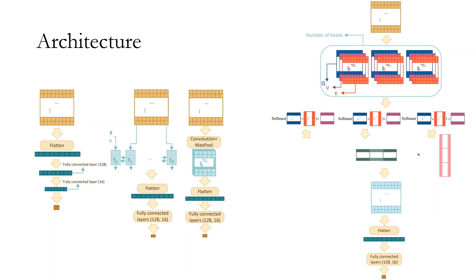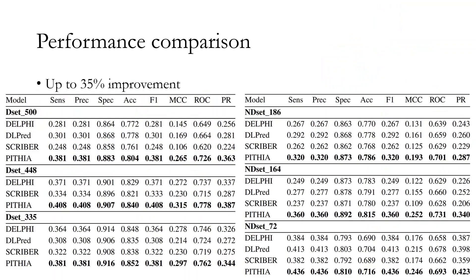We studied different architectures including multiple dense layers, RNN, and CNN. Finally, we settled on this model that uses self-attention, which performs the best, as shown on the right side of the picture. We compared our method with three state-of-the-art models, namely DLPREP, Scriber, and Delphi. We were able to outperform each and every one of these models on multiple metrics across all tested datasets, and we improved the performance of our model with respect to area under precision-recall by up to 35%.